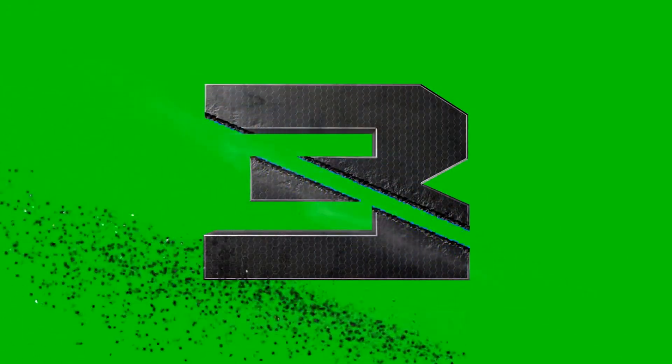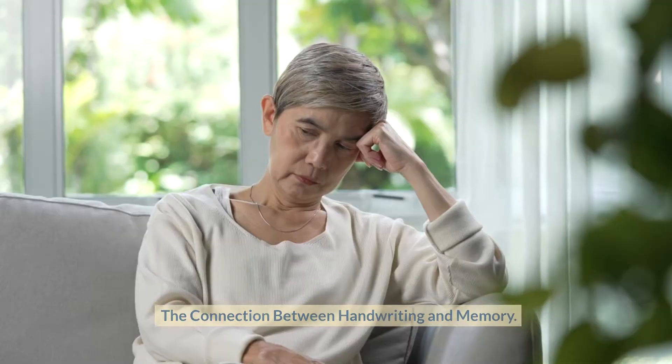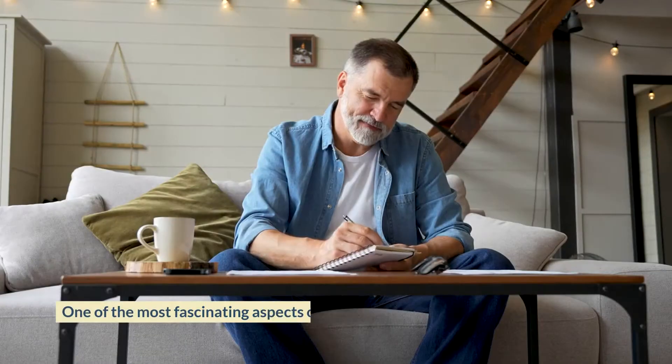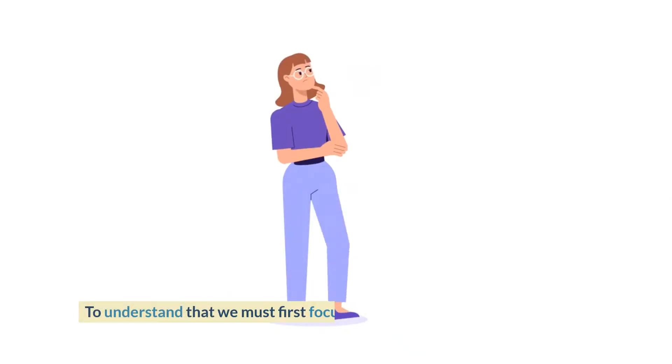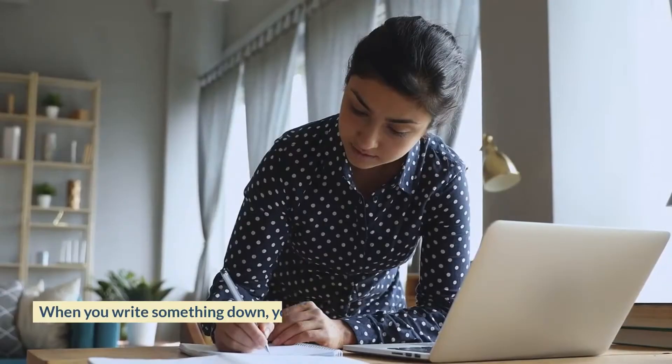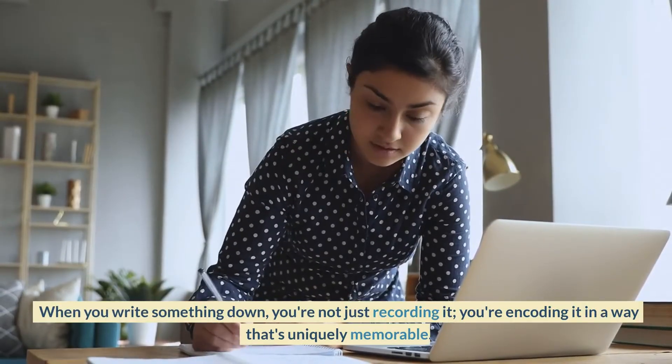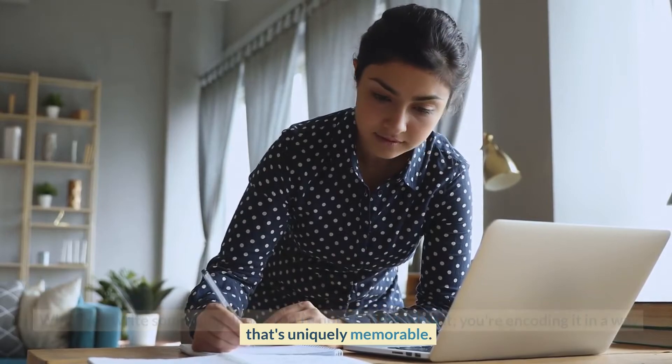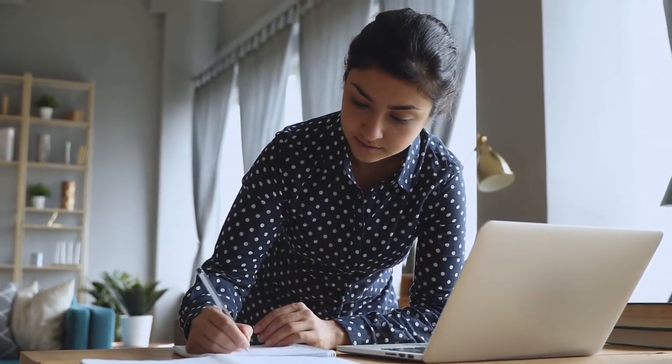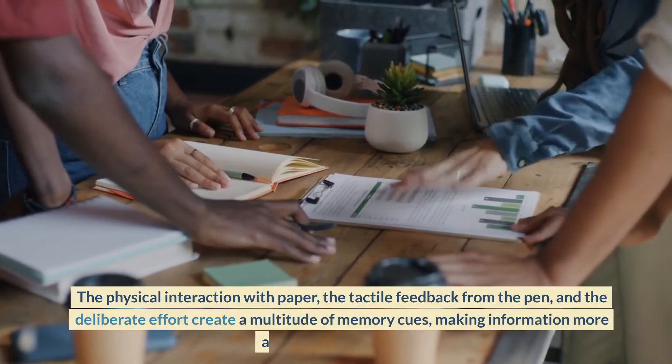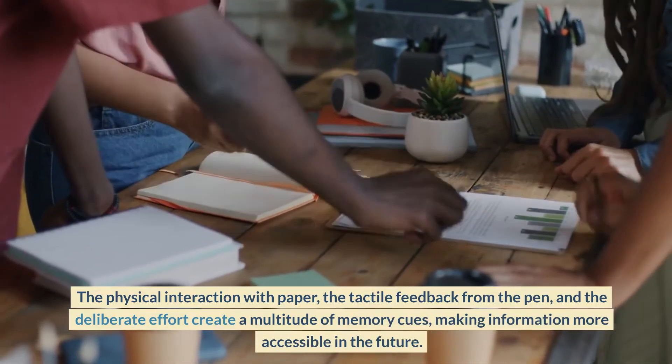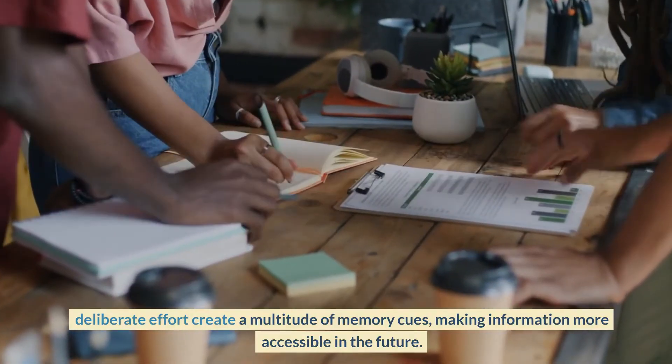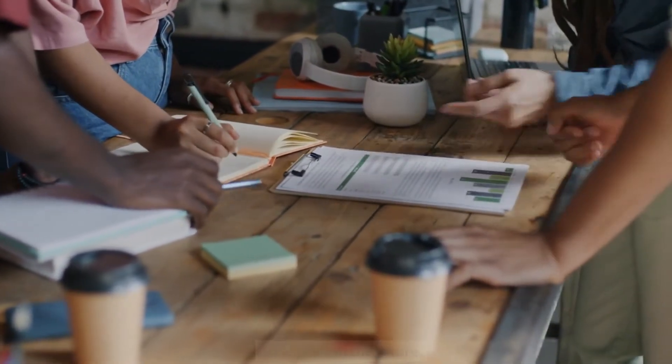This brings us right up to number three, the connection between handwriting and memory. One of the most fascinating aspects of handwriting is its profound link to memory. To understand that we must first focus on the so-called encoding process. When you write something down, you're not just recording it. You're encoding it in a way that's uniquely memorable. The physical interaction with paper, the tactile feedback from the pen, and the deliberate effort create a multitude of memory cues, making information more accessible in the future.